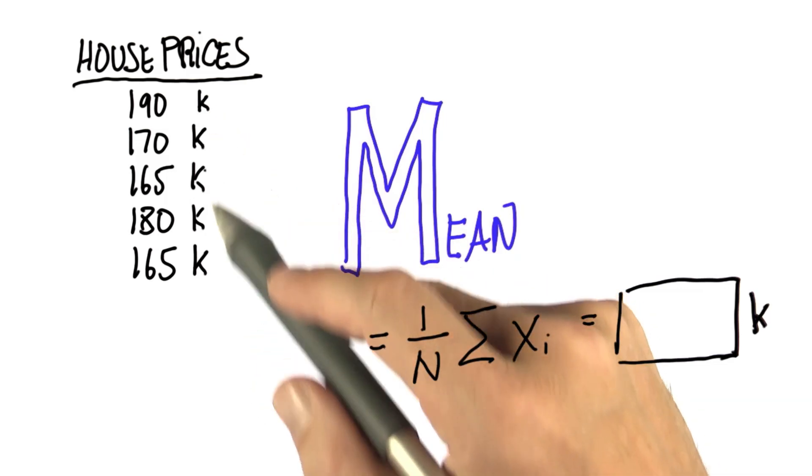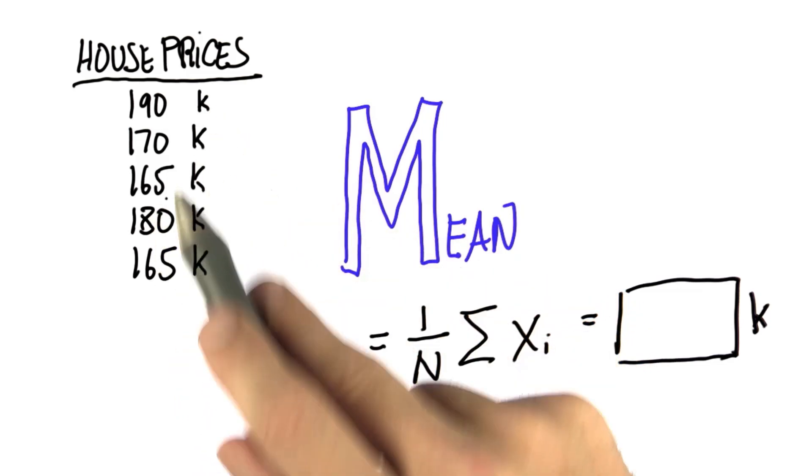When you put in the number, I don't worry about the thousands. It's something between 165 and 190.